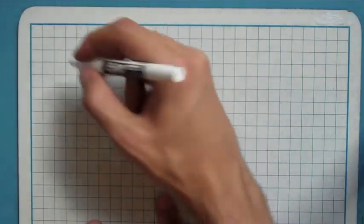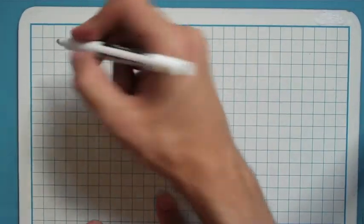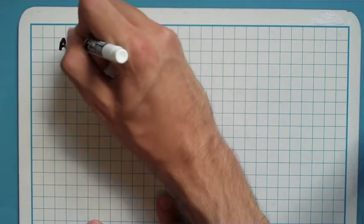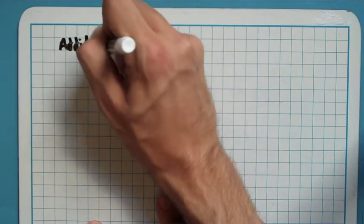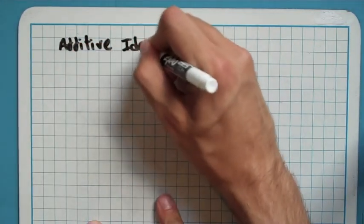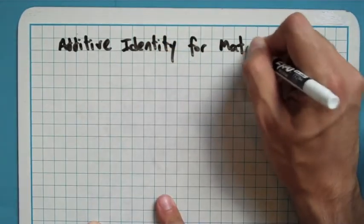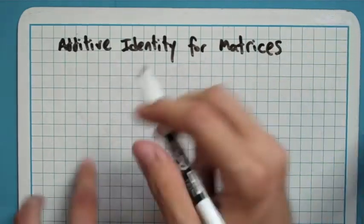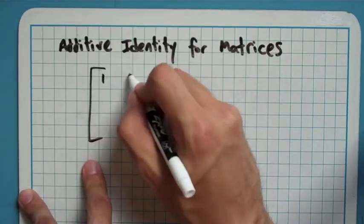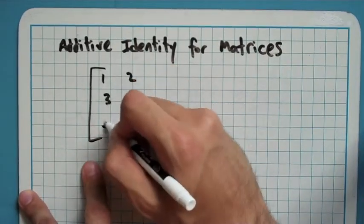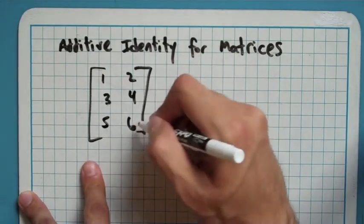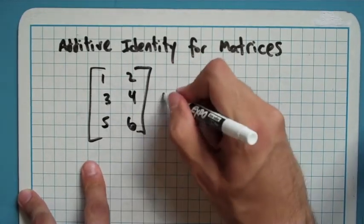But, I wanted to show you one quick thing here related to this. Let's talk about additive, let's go with an additive inverse. Well, now, let's just go with additive identity for this. So, additive identity for matrices. Let's just say I had a random matrix here. 1, 2, 3, 4, 5, 6. And, I want to know, what can I add to that?